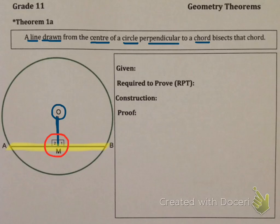Now if you have this situation, Theorem 1 says that you can assume that this chord is bisected, meaning AM equals MB. So now we have to prove that in every situation where you have a line from the center that's perpendicular to the chord, it must be broken in half. When proving theorems you always have four headings: given, required to prove, construction, and then you actually prove it.